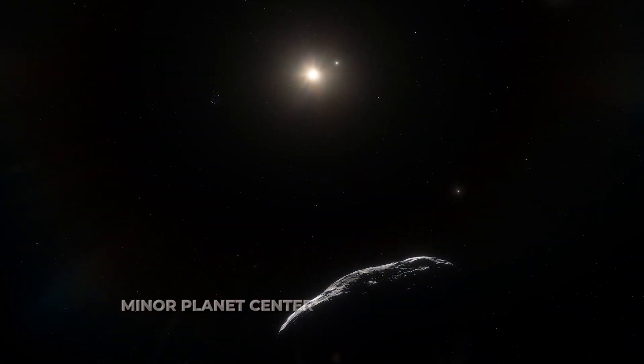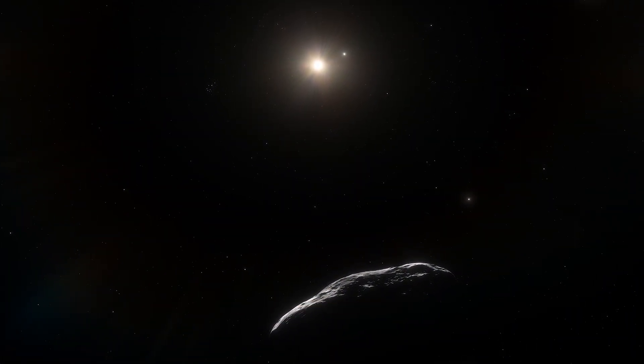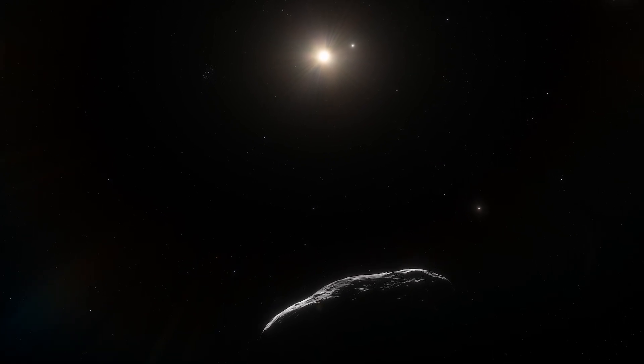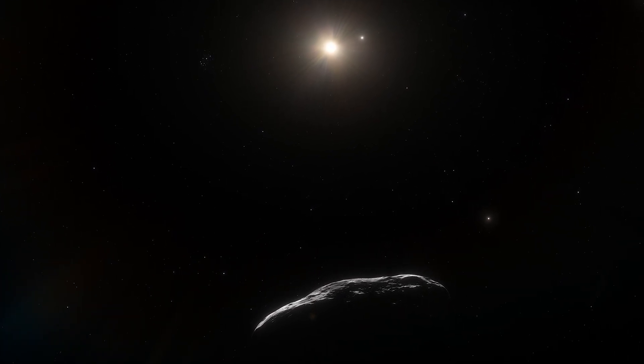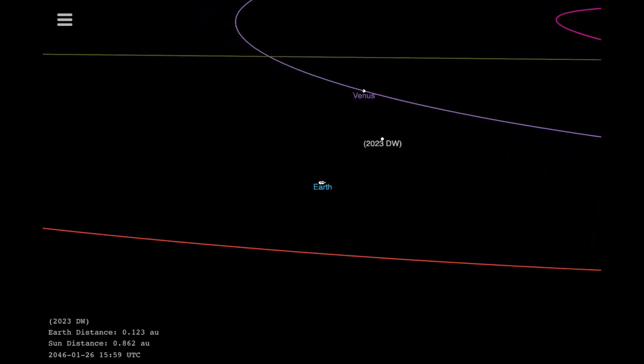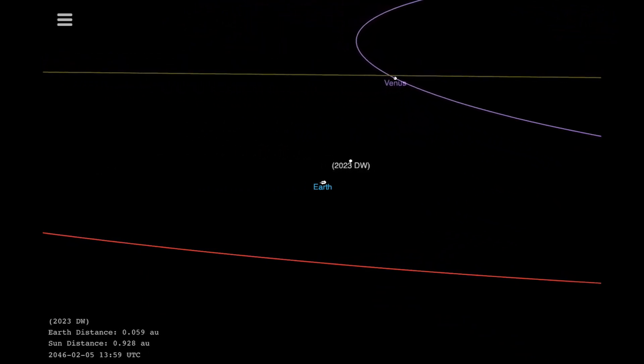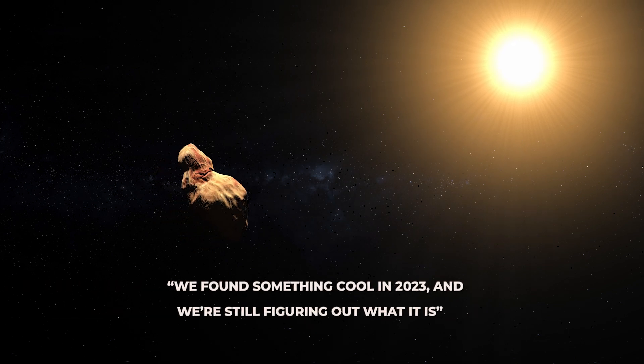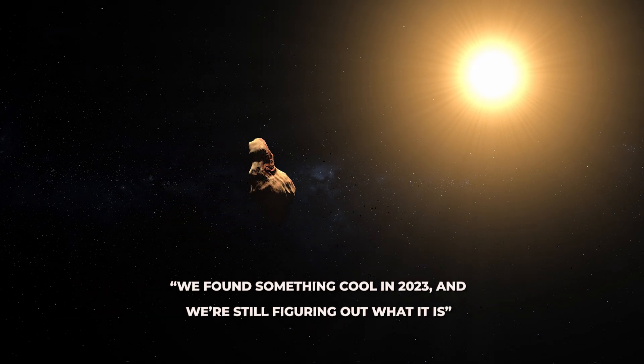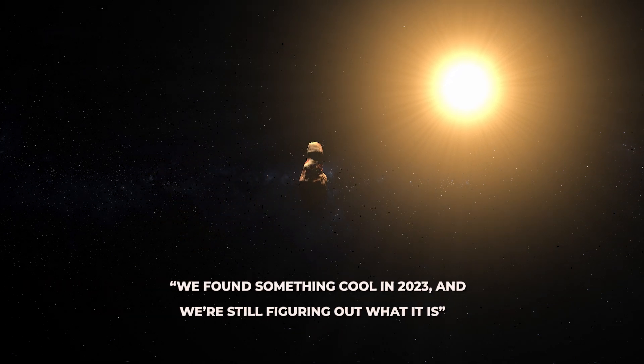The discovery was reported to the Minor Planet Center, the central hub for all things related to small bodies in our solar system. They gave it the temporary designation 2023-DW, astronomer speak for we found something cool in 2023 and we're still figuring out what it is.